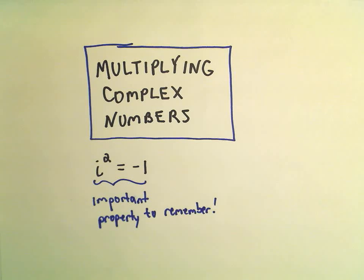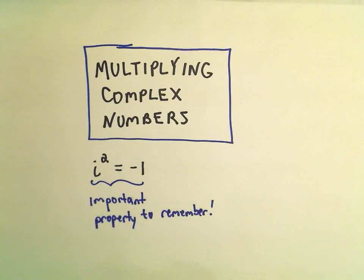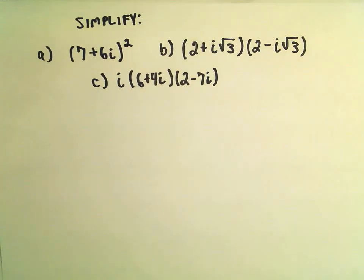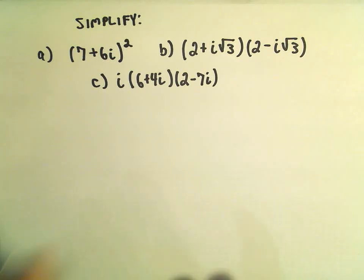Alright, in this video I'm going to do some examples of multiplying complex numbers. And to me the only thing that I have to remember really is that any time I end up with an i squared, I can simply replace that with a negative 1. So other than that you're going to see it's just a lot of distributing, collecting like terms, and making use of that property. So, three different problems here.